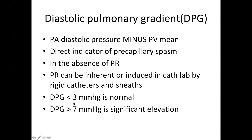Diastolic pulmonary gradient of less than 3 mm of mercury is completely considered normal. Diastolic pulmonary gradient of more than 7 is considered significant elevation and more than 12 is considered pathological.